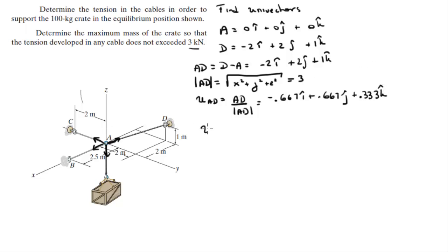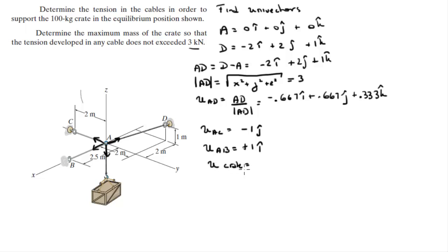The unit vector AD is the vector divided by its magnitude, giving -0.667i + 0.667j + 0.333k. The unit vector AC goes straight towards the negative y, so it's simply -1j. Unit vector AB goes towards the positive x, so it's simply +1i. And the unit vector for the crate goes straight down the z-axis, so it's -1k. Now that we have all four unit vectors, we can go to step 2.